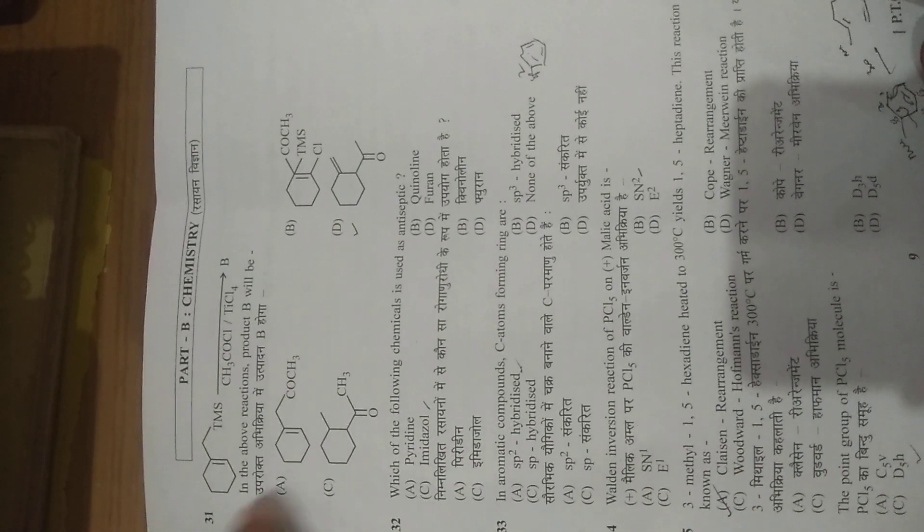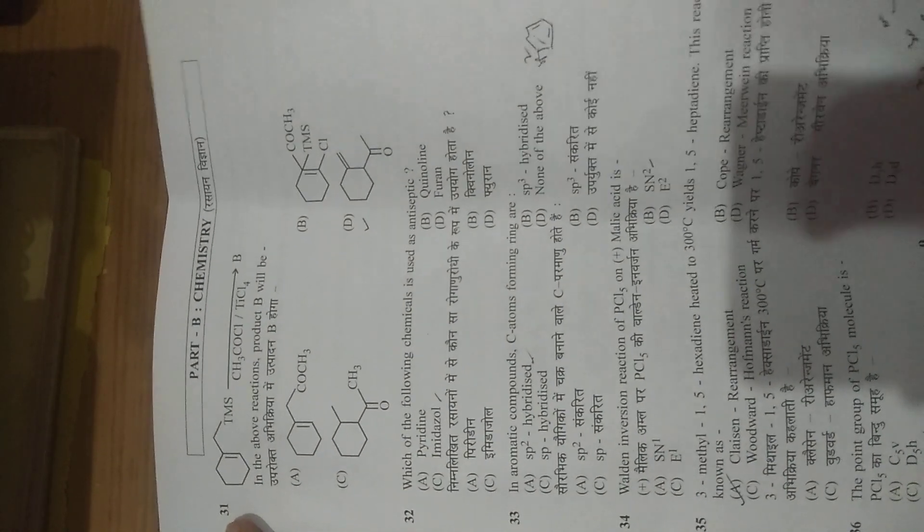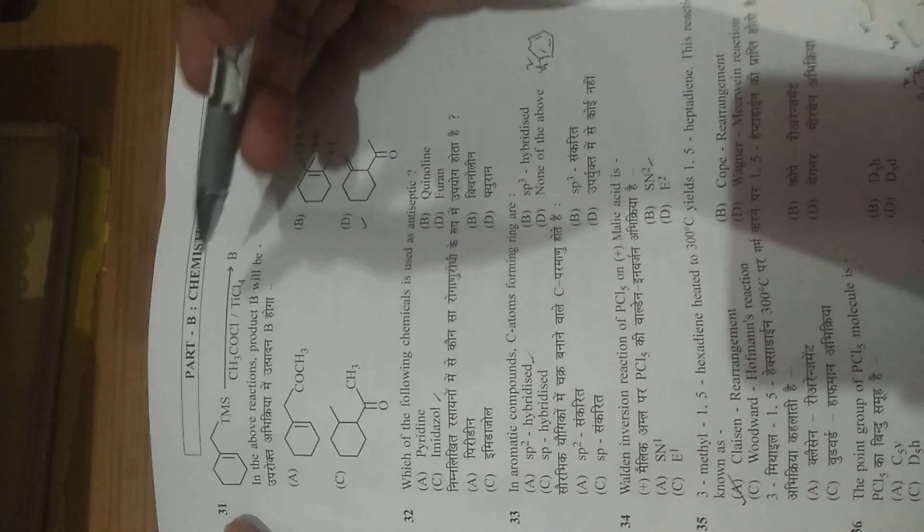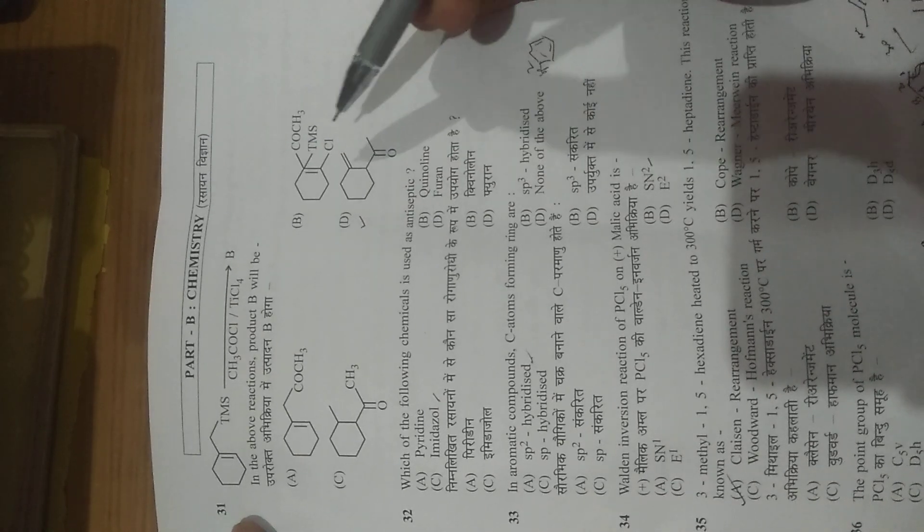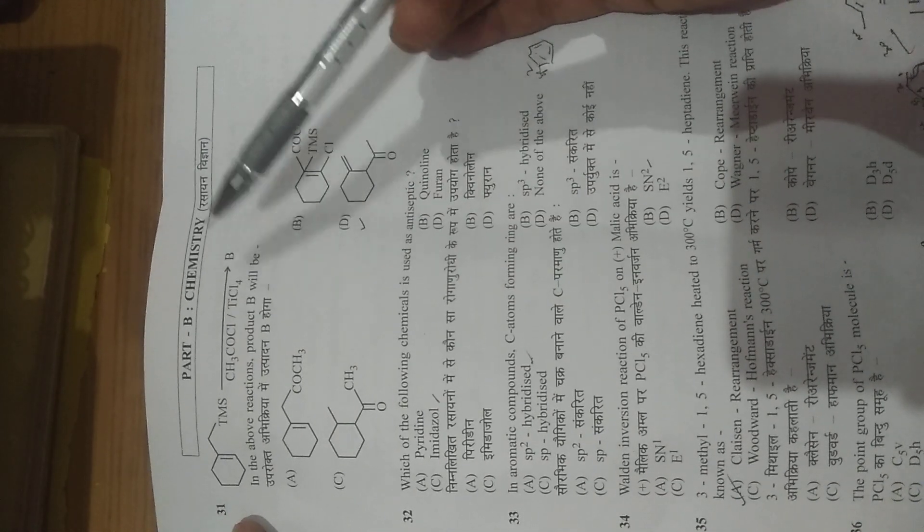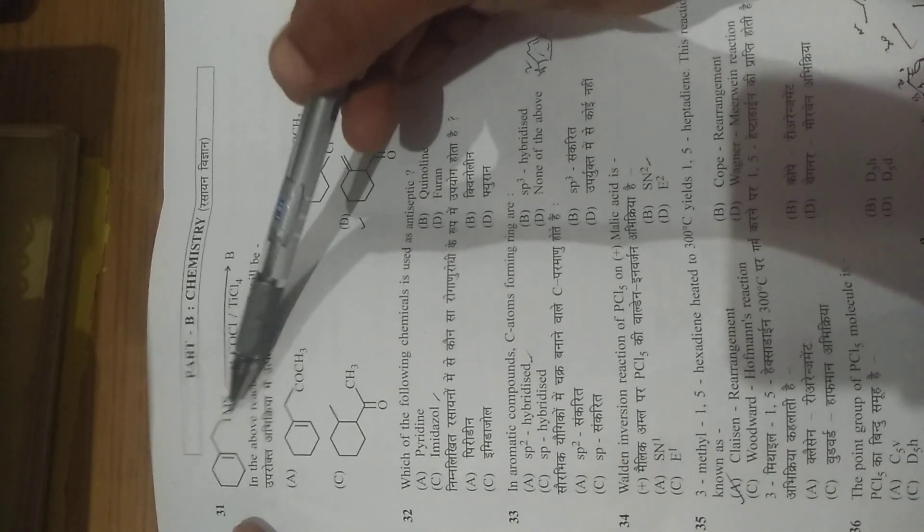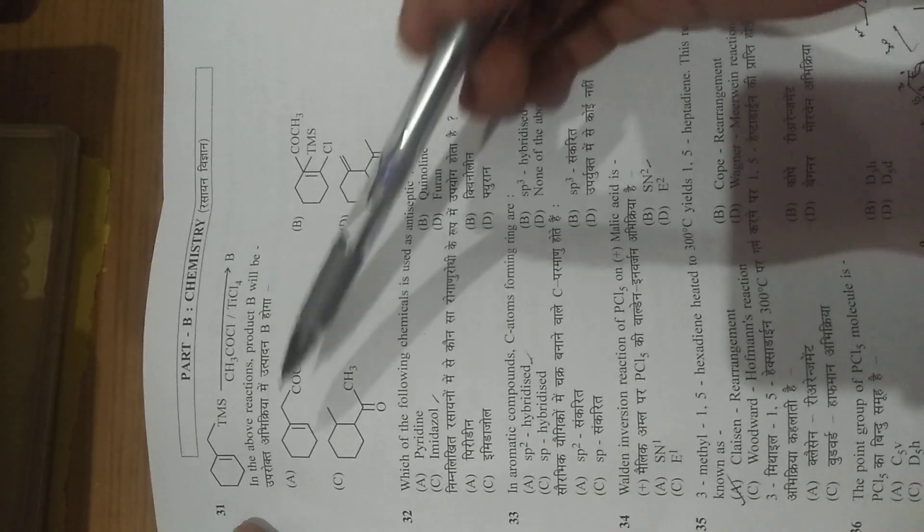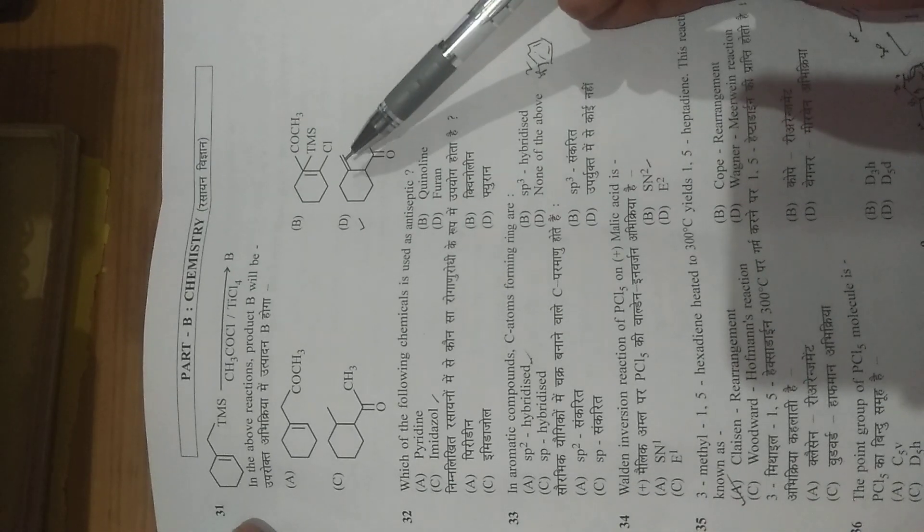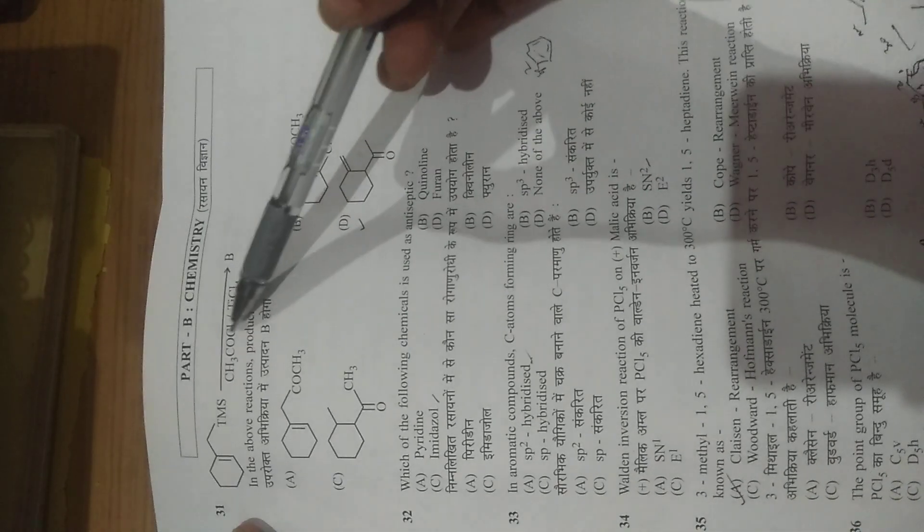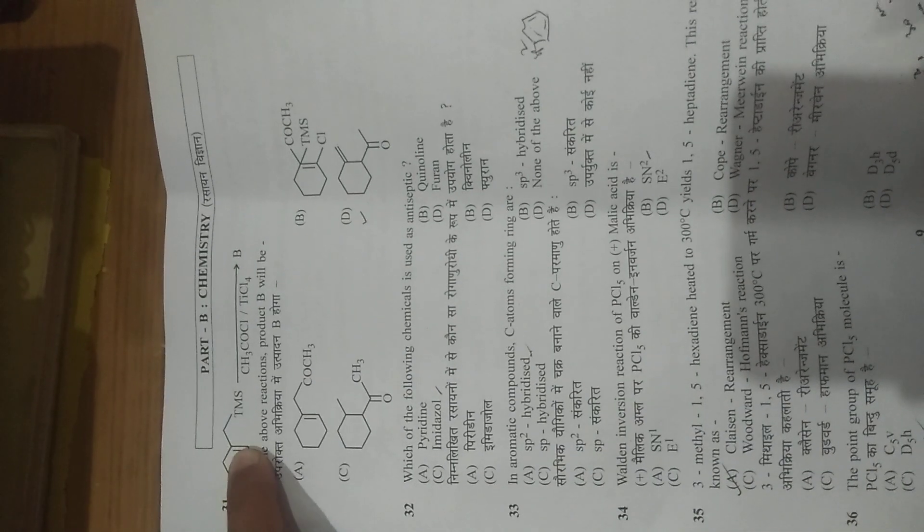Question number 31, the correct answer is D because it is TiCl4 ki presence mein reaction ho raha. So I think this reaction reagent is Tebbe reagent, which forms alkenes. TMS is given here, TMS is a good leaving group, so it will leave and a double bond will form here, and this C double bond with CH3 will attach here.